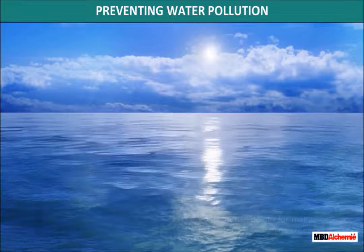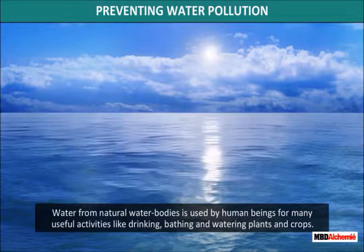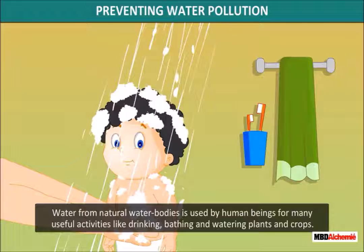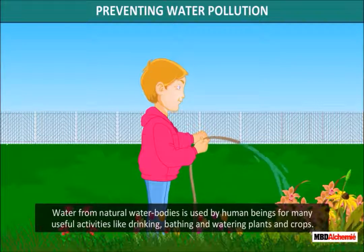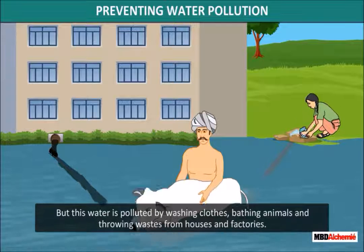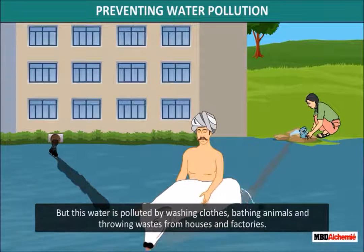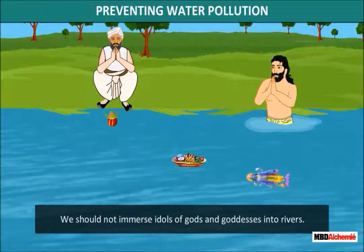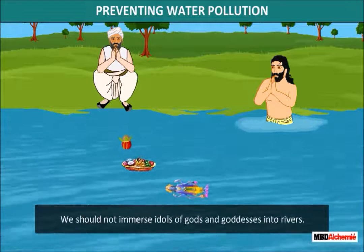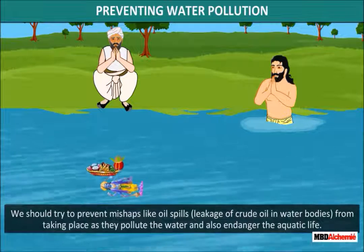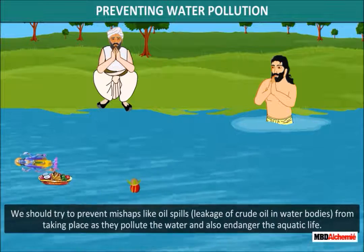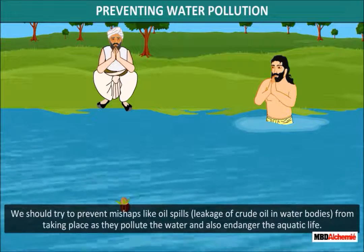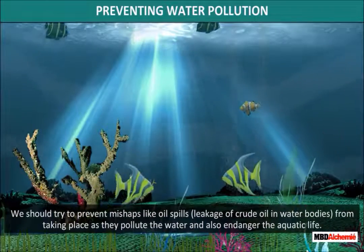Preventing water pollution: Water from natural water bodies is used by human beings for many useful activities like drinking, bathing, and watering plants and crops. But this water is polluted by washing clothes, bathing animals, and throwing waste from houses and factories. We should not immerse idols of gods and goddesses into rivers. We should also try to prevent mishaps like oil spills — that is, leakage of crude oil in water bodies — as they pollute the water and endanger aquatic life.